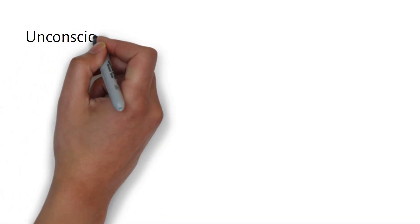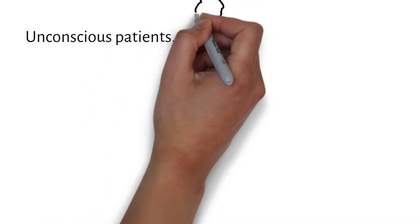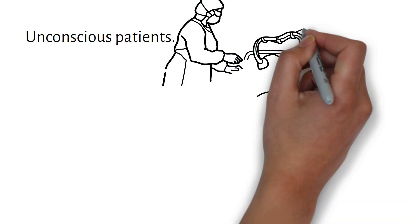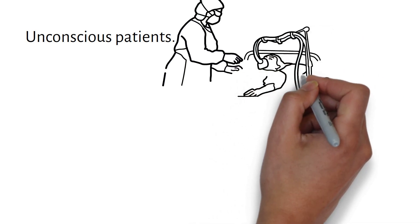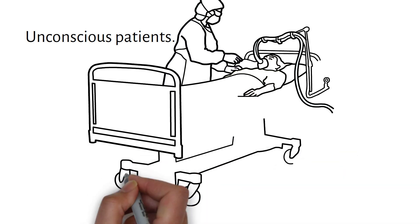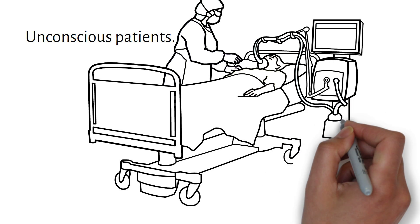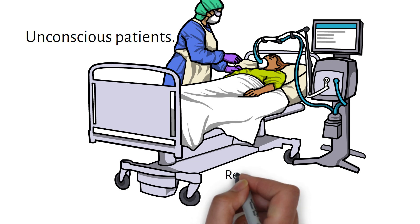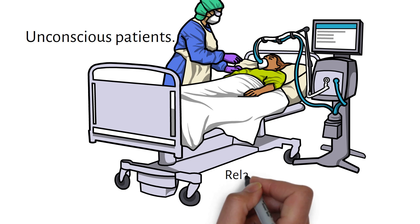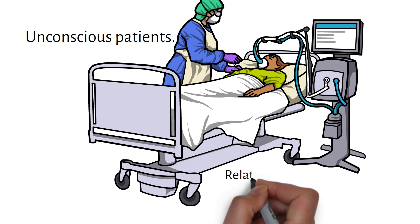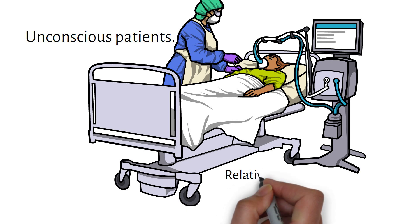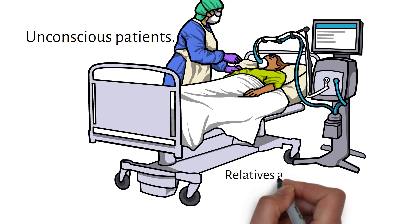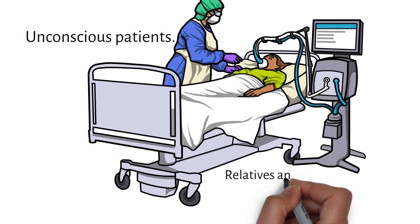Another area of consent is in unconscious patients. Some patients are kept alive with supportive treatments such as lung ventilation. These patients may never have made any decisions while awake about the care to be provided when they are unconscious. Decisions about continuing or stopping treatment must be made very carefully. Where relatives and friends are available, doctors can discuss the details of the treatment process with them and ask for consent.